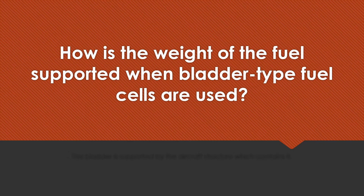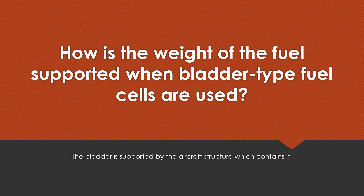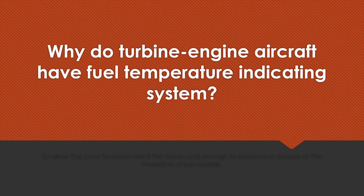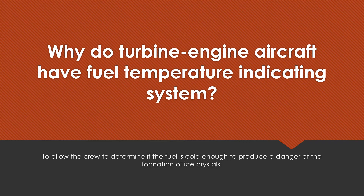How is the weight of the fuel supported when bladder type fuel cells are used? The bladder is supported by the aircraft structure which contains it. Why do turbine engine aircraft have fuel temperature indicating systems? To allow the crew to determine if the fuel is cold enough to produce a danger of the formation of ice crystals.